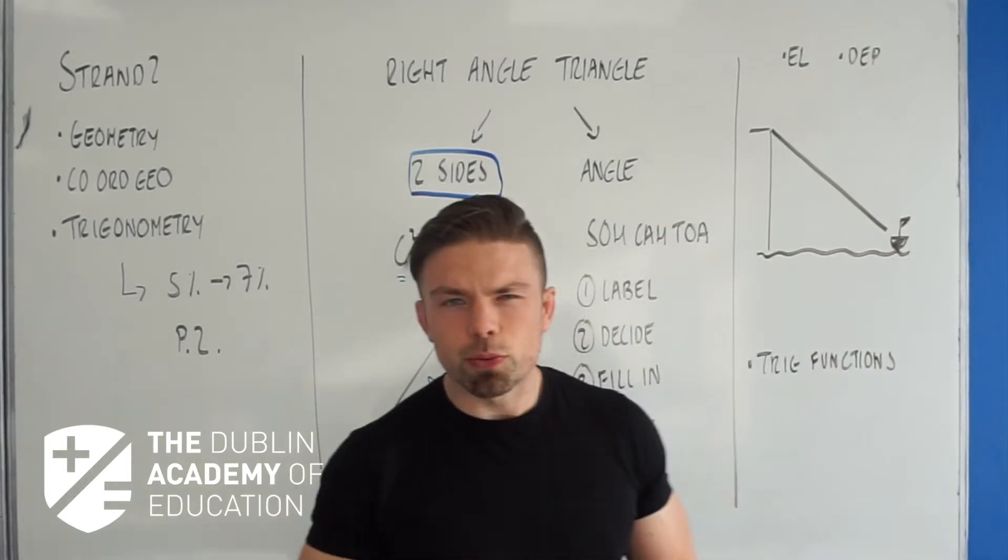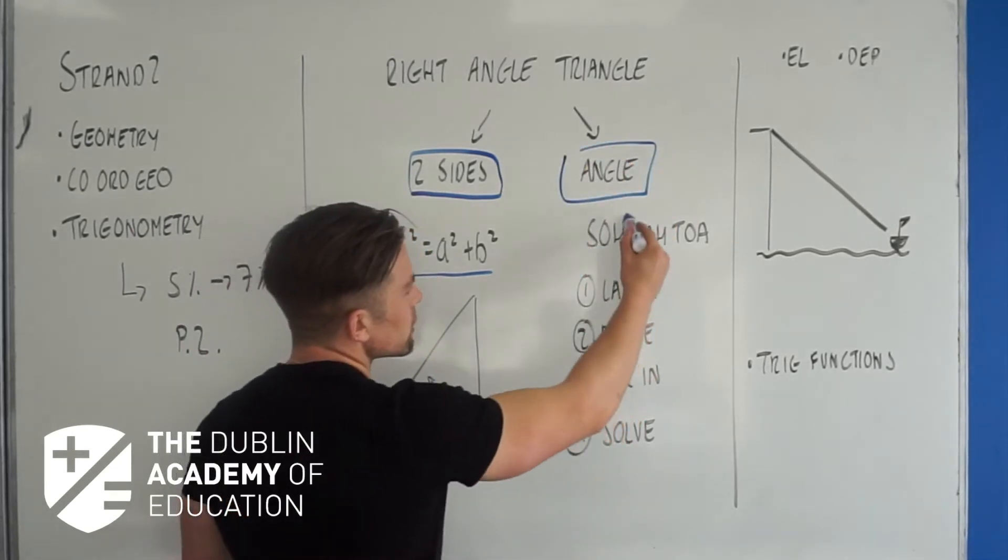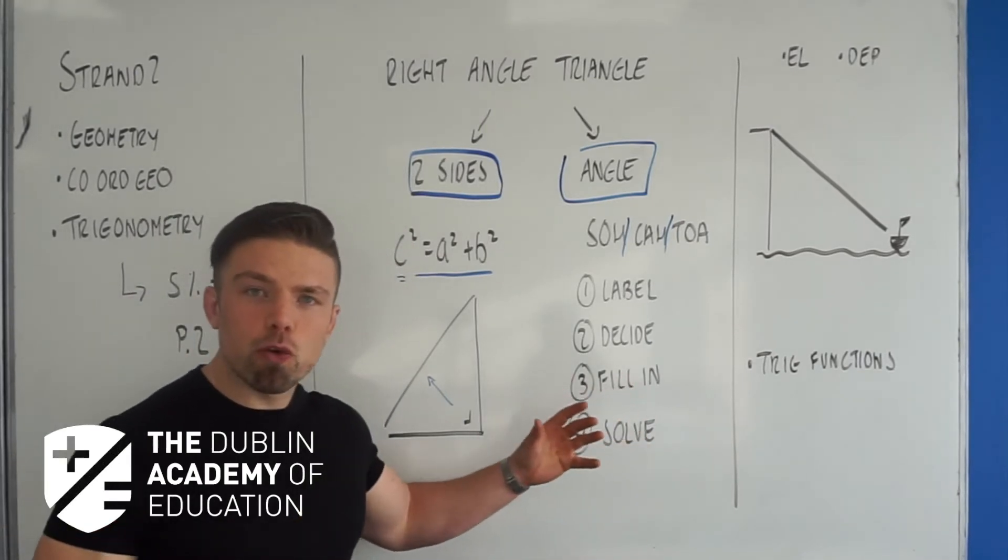The next idea is if we are given an angle in the question we use the SOH CAH TOA idea which we know is a password for finding sine, cosine, tan and then you follow my four steps.